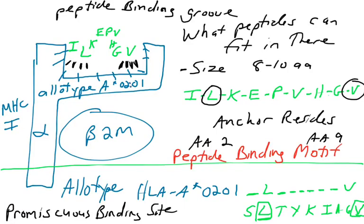In the previous video we left off talking about the fact that there are different alleles for the HLA-A genes. Alleles code for different allotypes of the alpha chain of MHC class 1 molecules, and different allotypes may have different peptide binding motifs and can present different peptides.